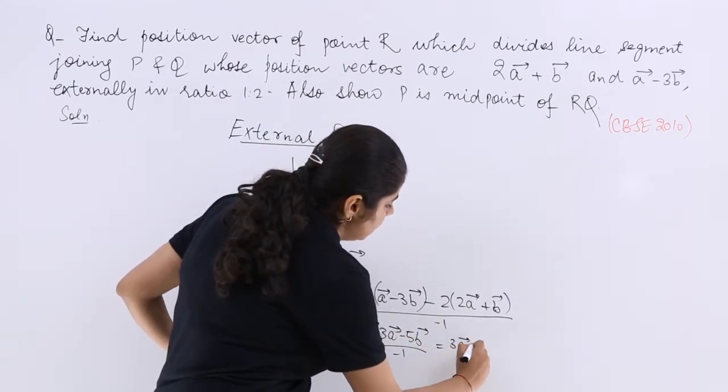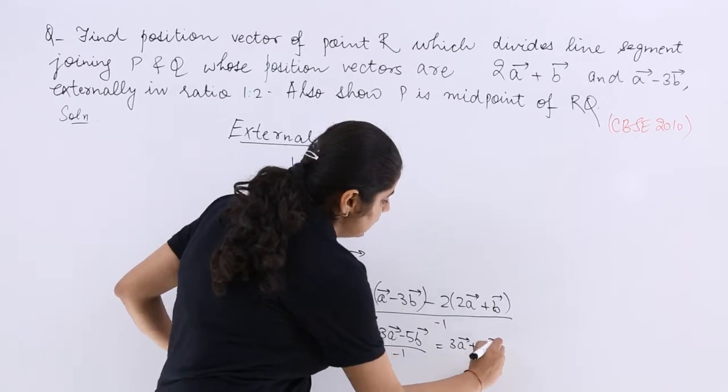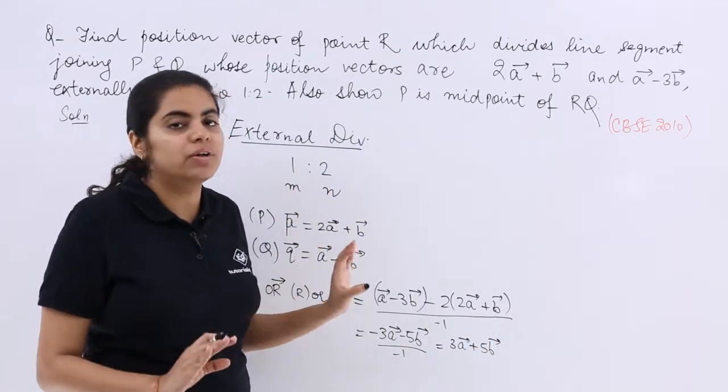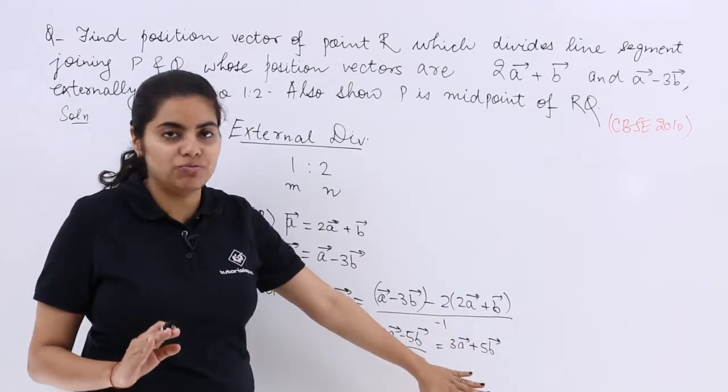So this is equal to 3A vector plus 5B vector. And this is regarding the R. Now this is the first part wherein we had to find the position vector of R.